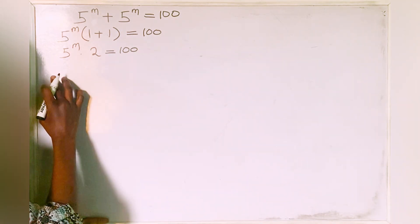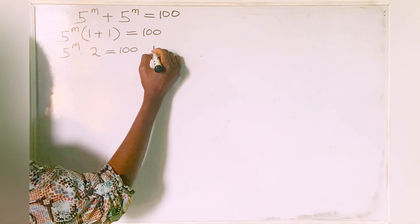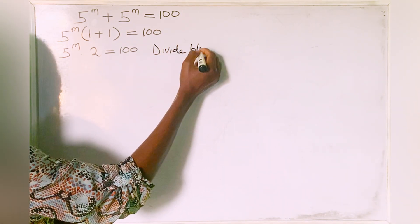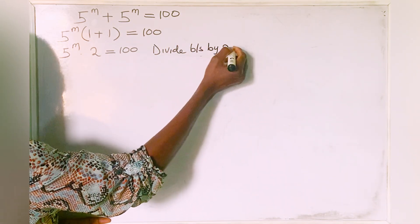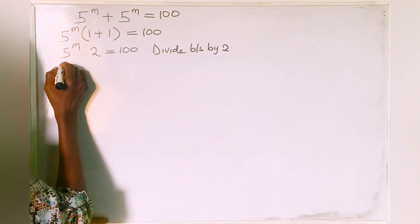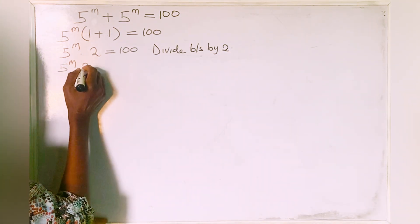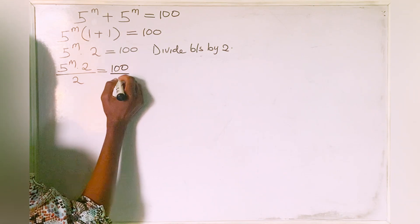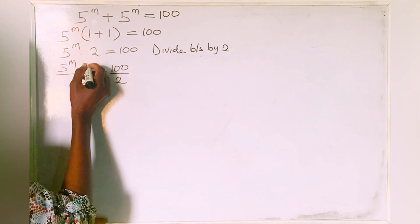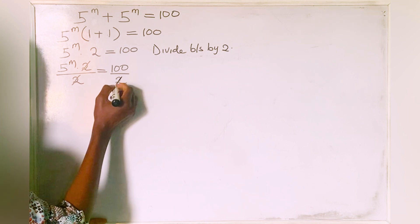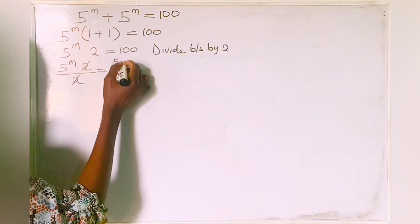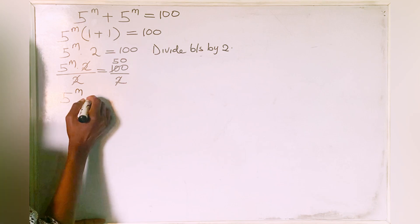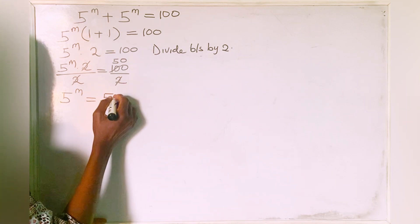Now we have to divide both sides by 2. So we divide both sides by 2. We have 5 to the power of m multiplied by 2 divided by 2 is equal to 100 divided by 2. The 2s cancel, giving us 50. So we now have 5 to the power of m is equal to 50.